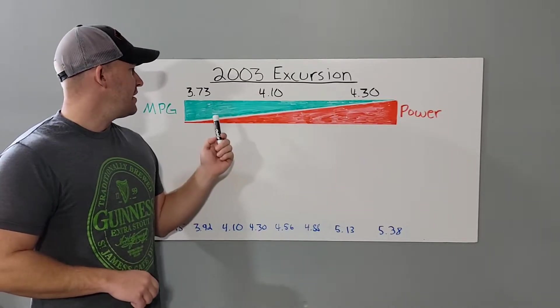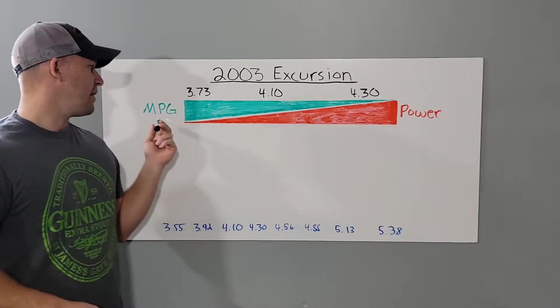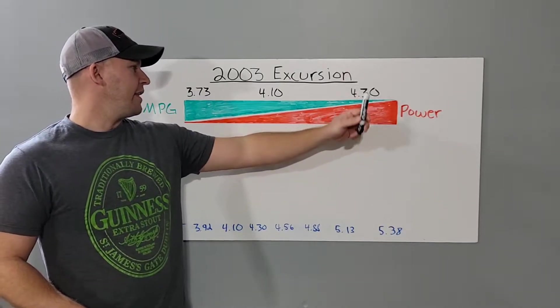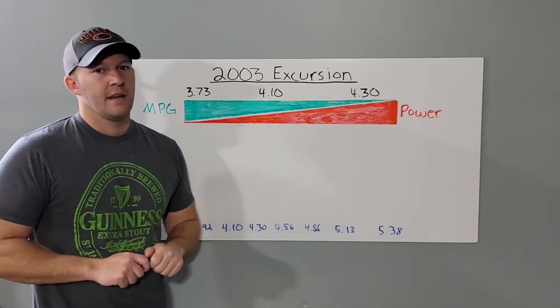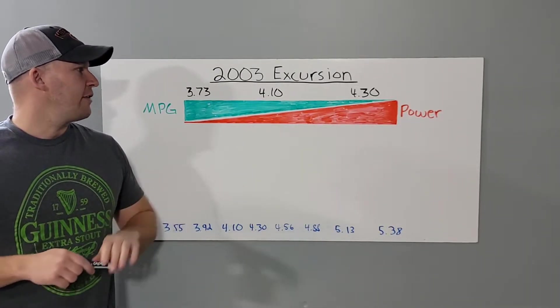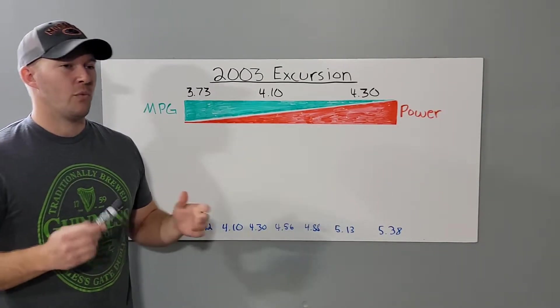Why do they offer these ones? Because this way they can advertise better miles per gallon. This one they can advertise better towing power. Which one works for you is going to depend on your particular situation and what you want.